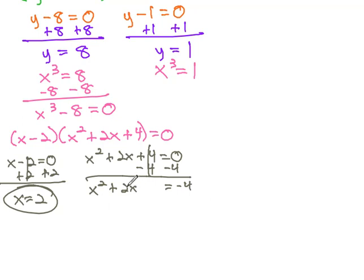Take half of 2 and square it. Half of 2 is 1. 1 squared is 1, so we're gonna add 1 to both sides. So it will factor to x plus 1 squared equals negative 3.